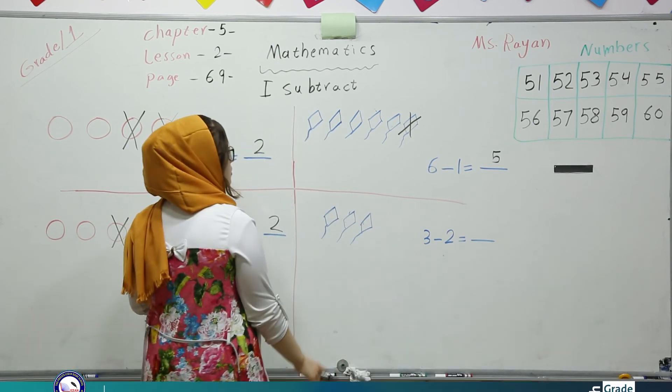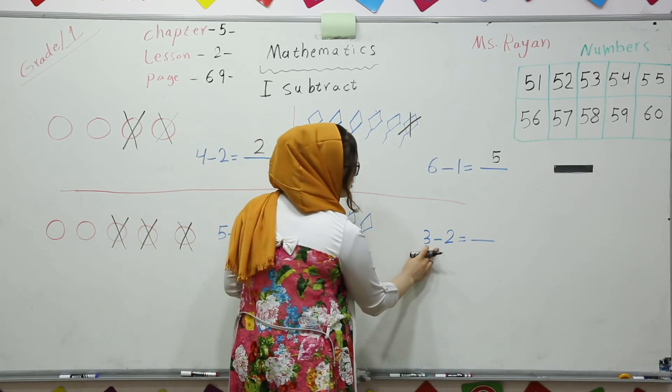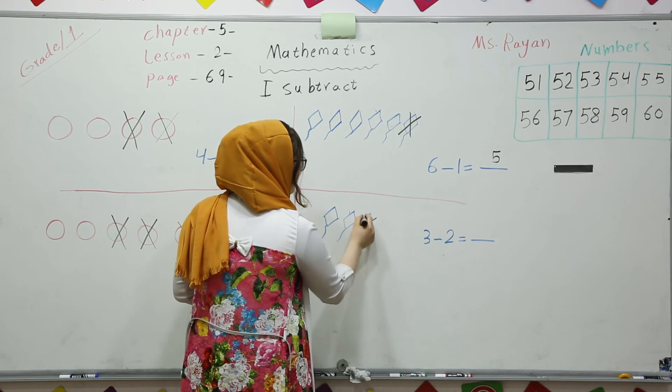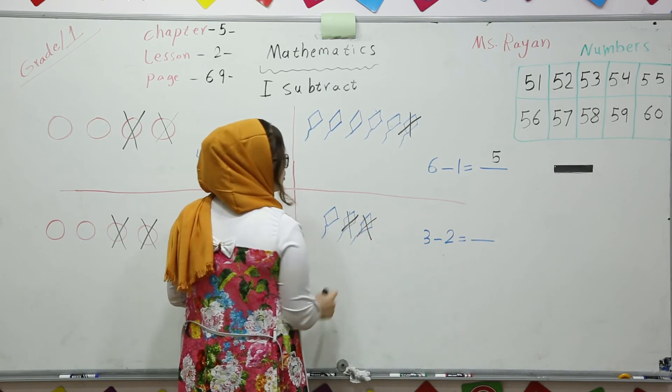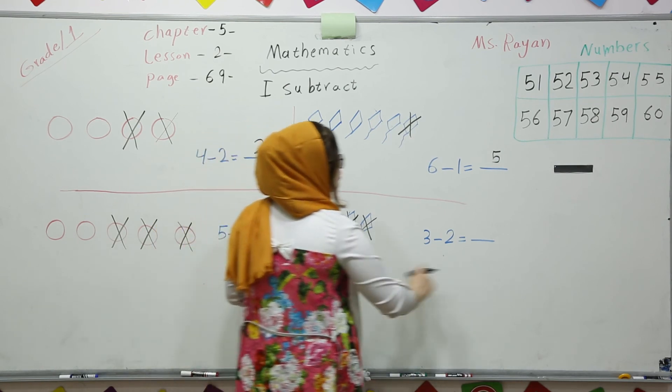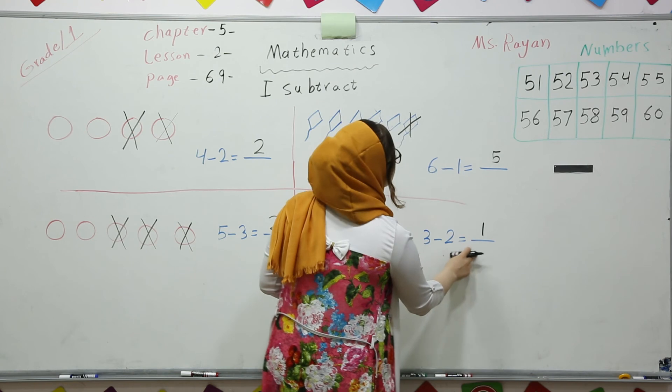Another one, we have got 1, 2, 3. 3 kites, you see? 3 kites. 3 minus 2, cross out 2. 1, 2. So, how many are left? There is only 1 left. 3 minus 2 equals 1.